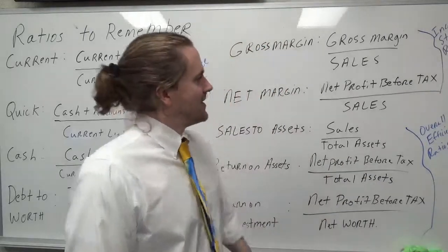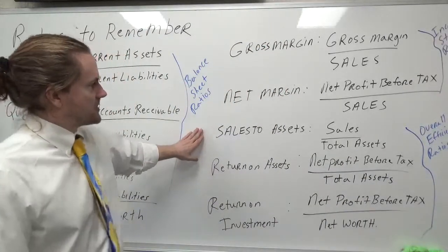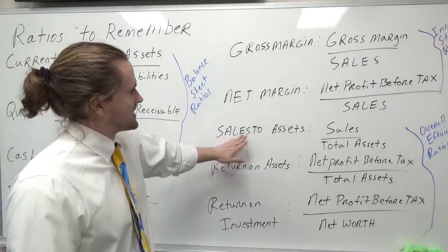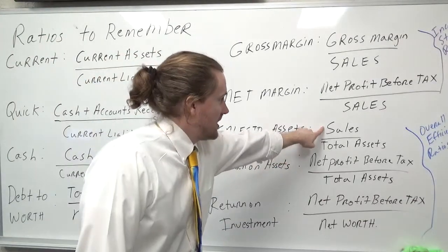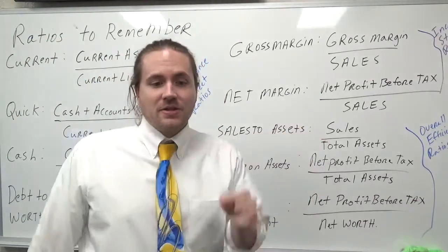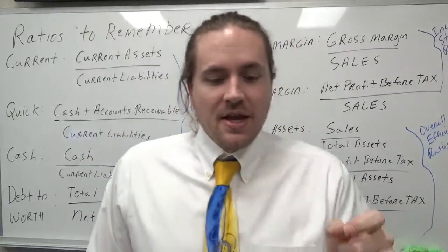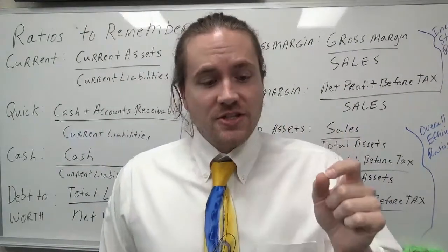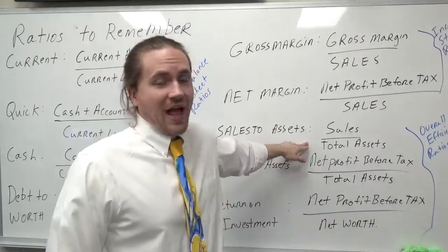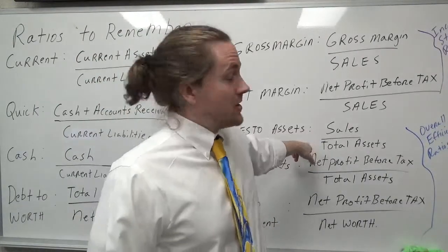Welcome back. Now we're going to look at some overall efficiency ratios. First we're going to look at sales to assets, which is the amount in sales divided by the total number of assets. That measures the efficiency of your total assets in generating sales.